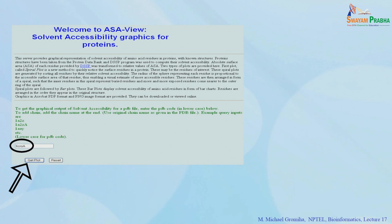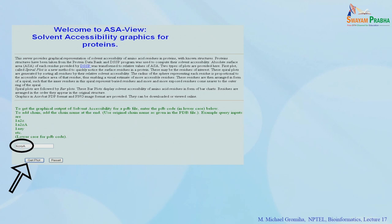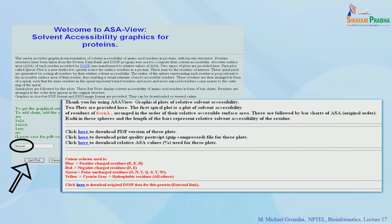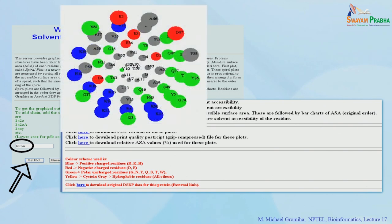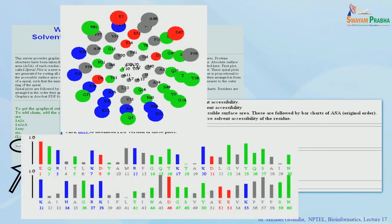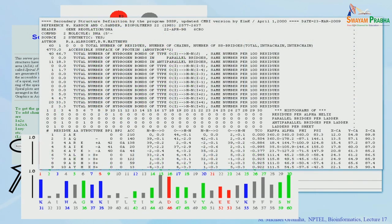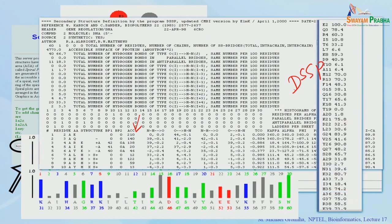The ASI View web server accepts any PDB ID and generates the spiral plot and bar chart. Users can select the type of output — PDF format or relative values — and view both the graphical representations and the exact ASA values for each residue. The server also provides a link to the raw DSSP output so users can access the precise numerical values for their protein of interest.